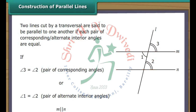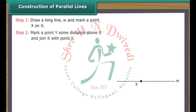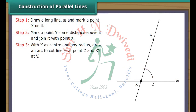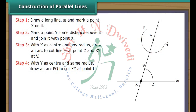We use a ruler and a compass to construct parallel lines. Draw a long line M and mark a point X on it. Mark a point Y some distance above it and join it with point X. With X as center and any radius, draw an arc to cut line M at point Z and XY at V. With Y as center and the same radius, draw an arc PQ to cut XY at point U.